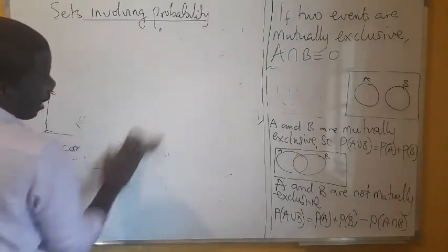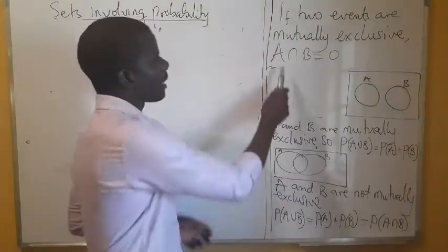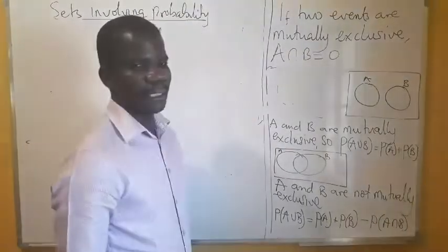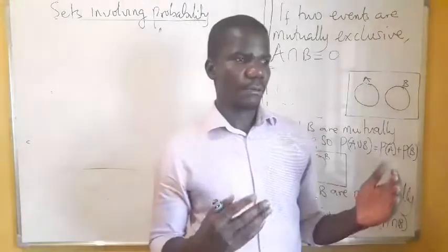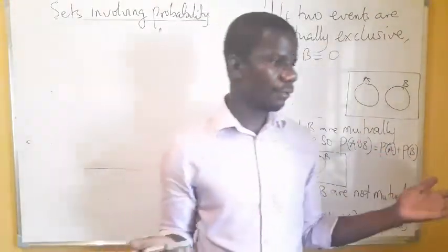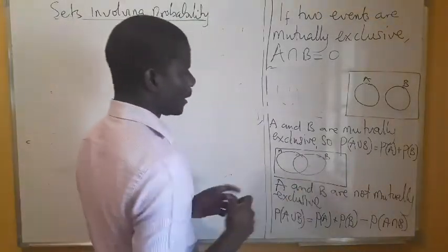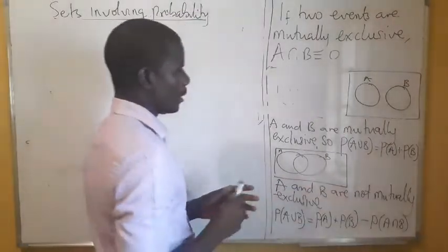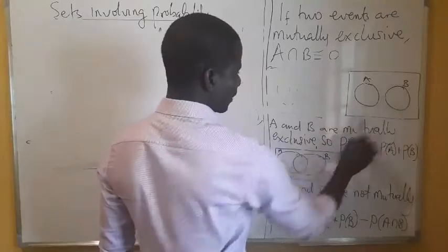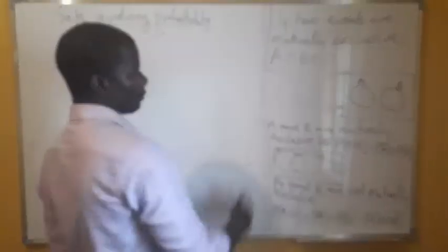If two events are mutually exclusive, they do not have an intersection set. If one occurs, the other one will not occur. So they don't have anything in common. Two events that are mutually exclusive — if one of them occurs, the other one will not occur. There are no elements in the intersection for two events that are mutually exclusive. So the union of these ones, you just add them. That is the addition rule of mutually exclusive events.